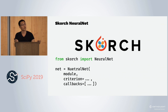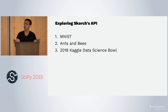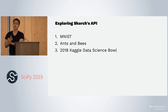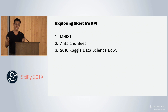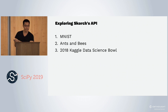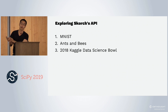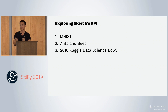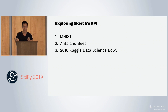We're going to go through three datasets in this talk. We go through MNIST, which is a classification problem. Then ants versus bees, which is a classification problem using transfer learning. And then the 2018 Kaggle Data Science Bowl problem, which is an image segmentation problem. Three different problems, all images, because images are pretty.